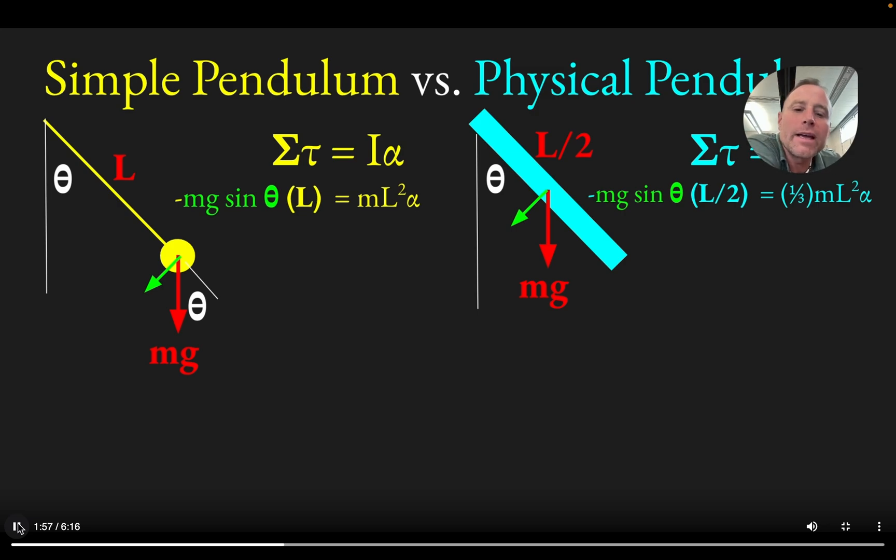And so you end up getting mg sine theta times L over two for the torque, instead of mg sine theta times L. And so what you see here is we have half the torque.